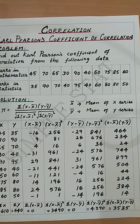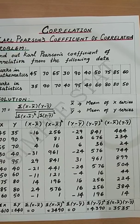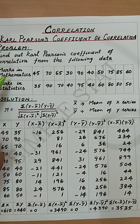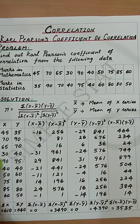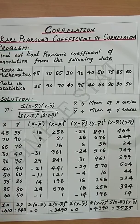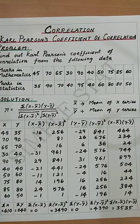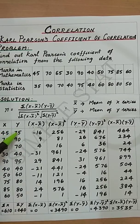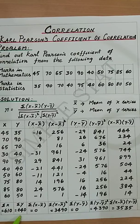Note that there's a formula under actual mean method. Now denoting the marks in mathematics as the variable x, write all its values and find its total which is summation x equals 610, and denote marks in statistics by the variable y, write all its values and find its total which is summation y equals 640.